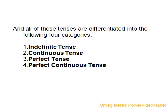If you already know it — indefinite tense, continuous tense, perfect tense, perfect continuous tense — for present tense you should say there are four kinds of present tense: present indefinite tense, present continuous tense, present perfect tense, present perfect continuous tense.